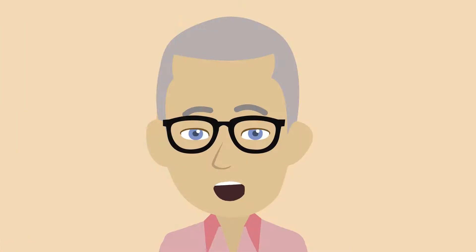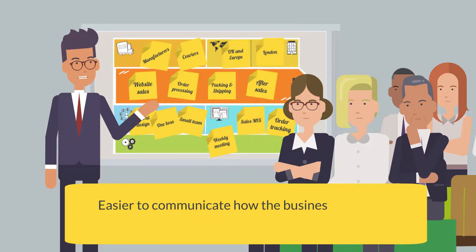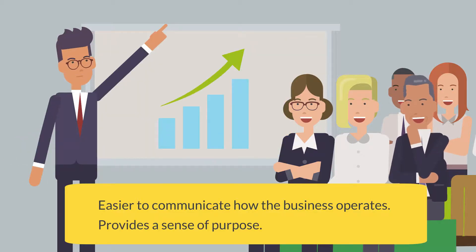There are a number of benefits to having an operating model canvas. By having a shared view of how the organization operates, it becomes easier to communicate it to a wide audience such as employees, which provides a sense of shared purpose. This is even more effective when combined with a vision statement about the future of the organization.